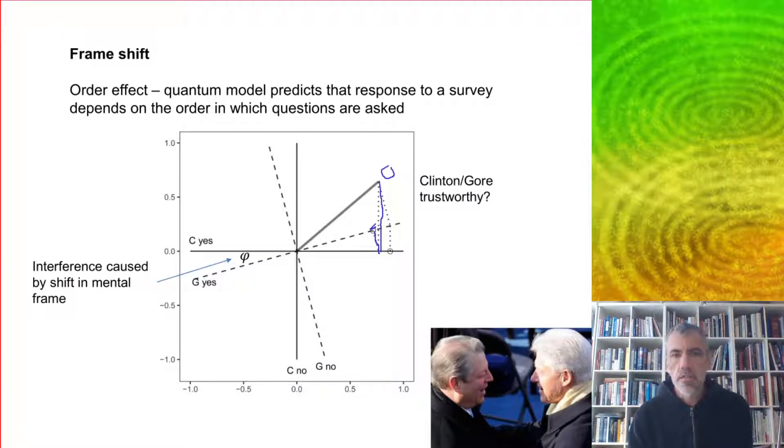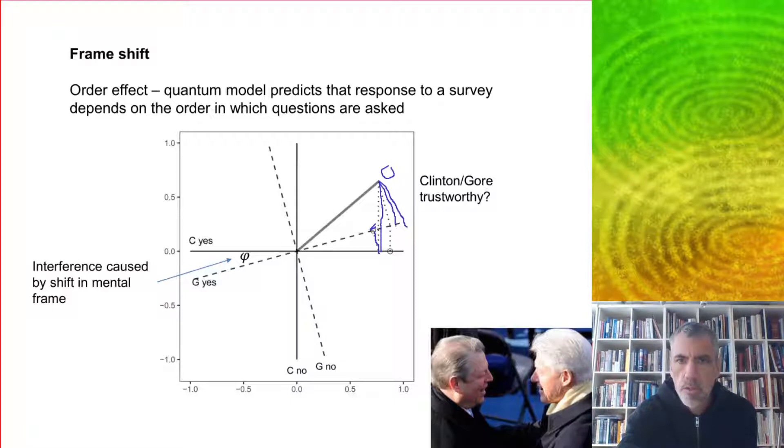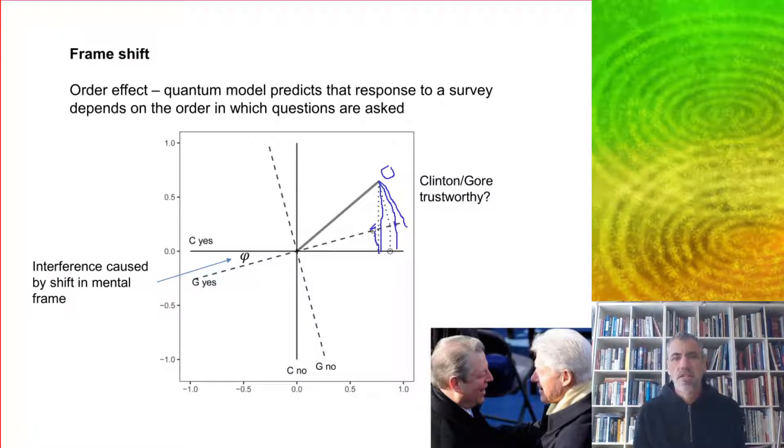But if the order of the question is reversed, you project first onto the Gore axes like that, and then onto the Clinton axis, and you get a different final probability. The reason for this result is that there's an interference caused by a shift in the mental frame.